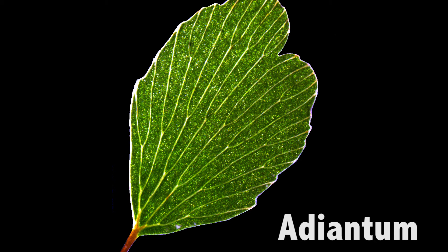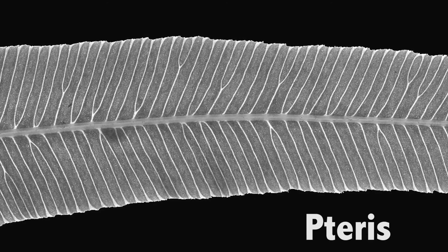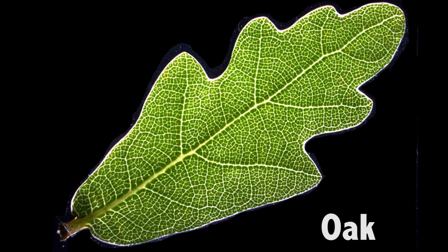Here are some of the most common networks observed in leaves. This fern has a simple network. Another type of fern shows a clear hierarchy in the diameter of veins. While oaks show this vein hierarchy as well as reconnections and loops.